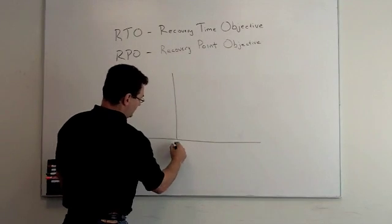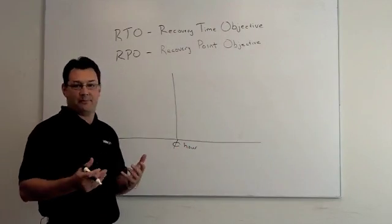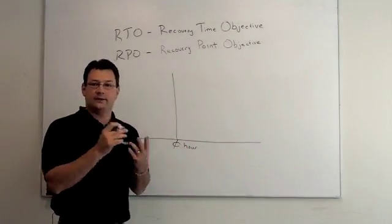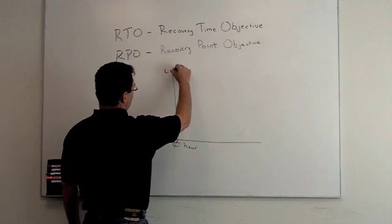The middle of the timeline we'll call zero hour. It's when an event happens - might be a lightning strike, pipes bursting, the building burning down, whatever it is. Let's just say it's a lightning strike.